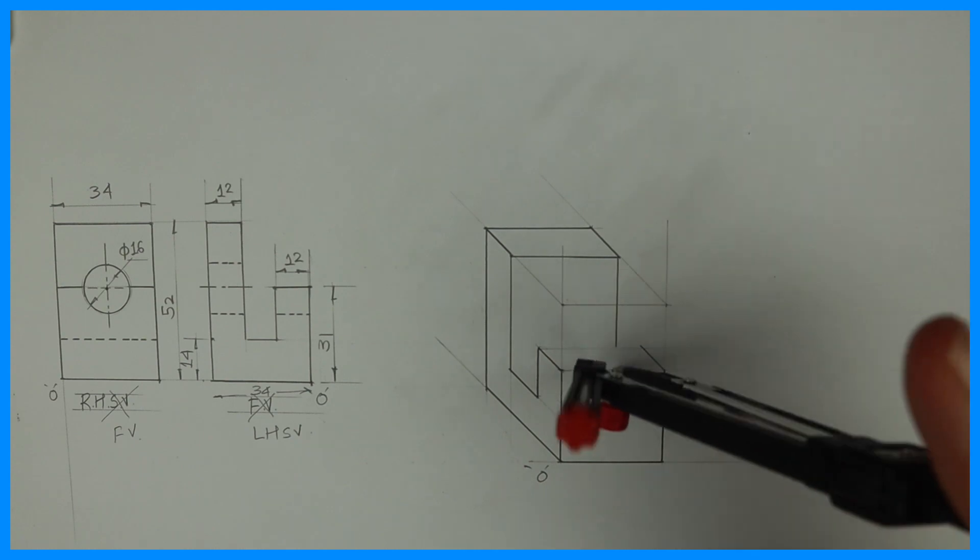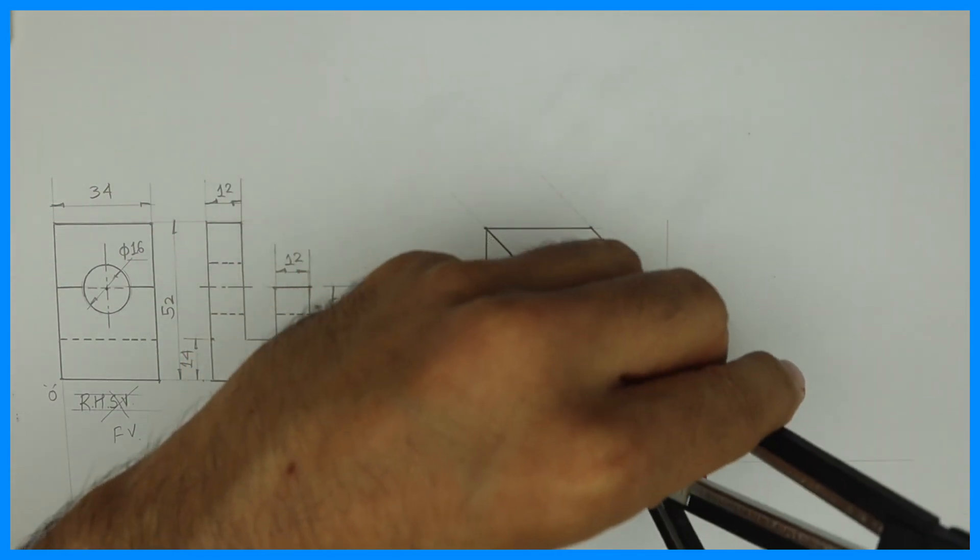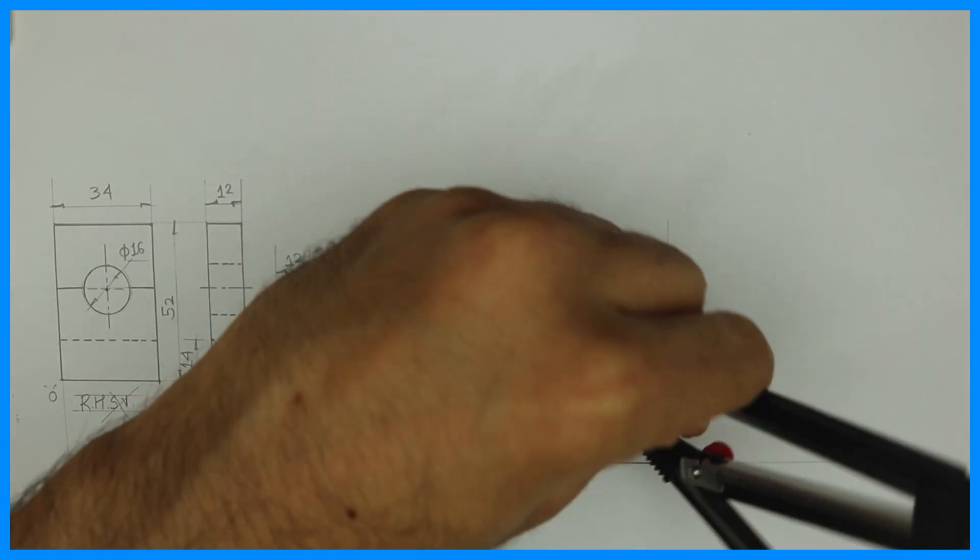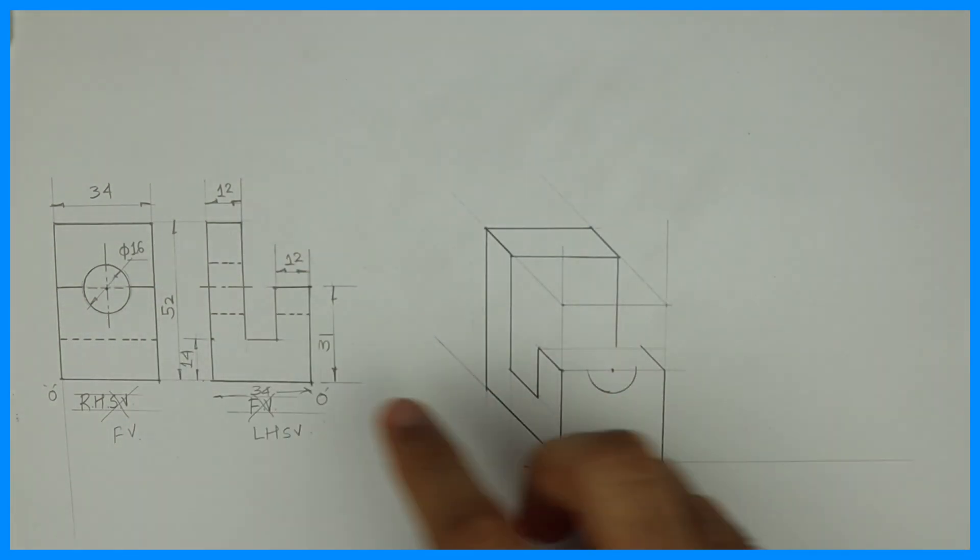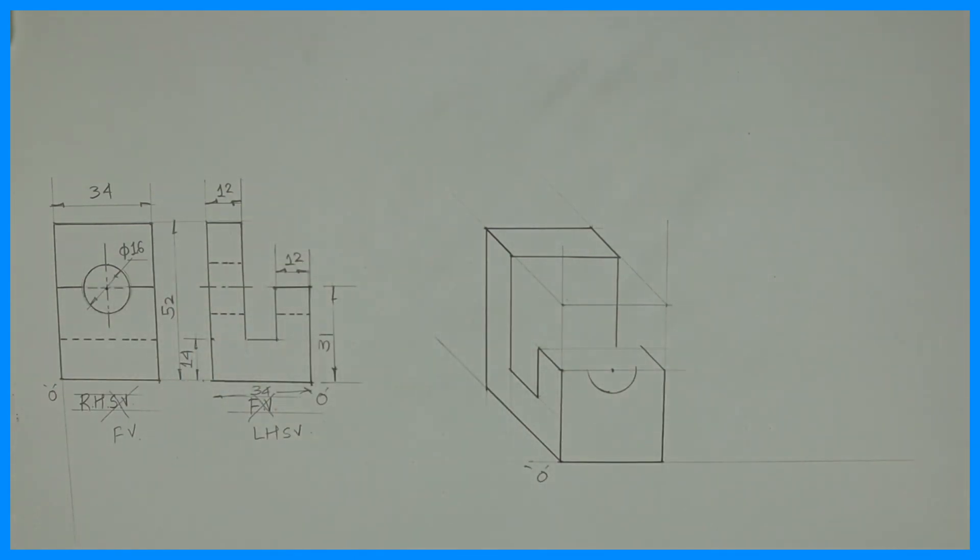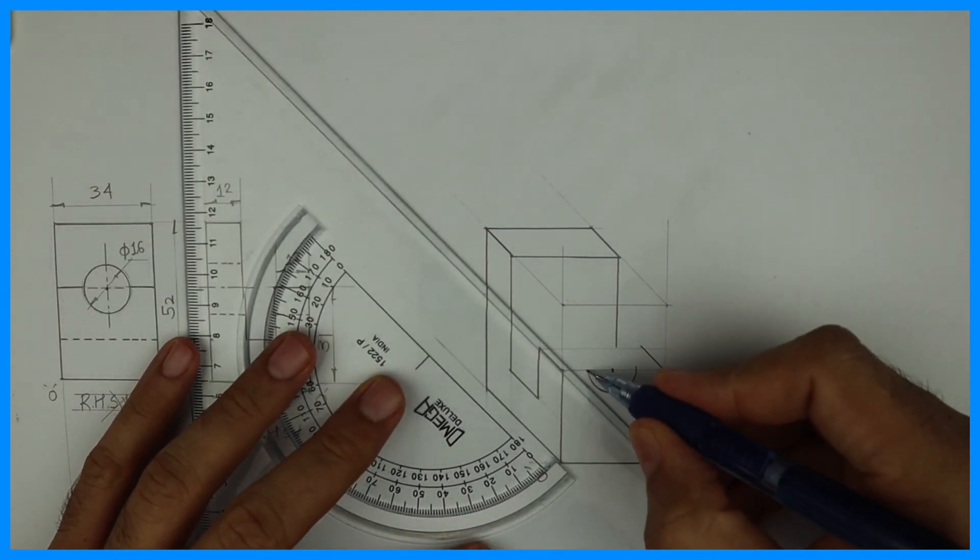So over here we can see half circle and behind there will be a full circle. See this half circle, it's here and behind we have full circle. So first after drawing this, you can take all these points behind by 12.